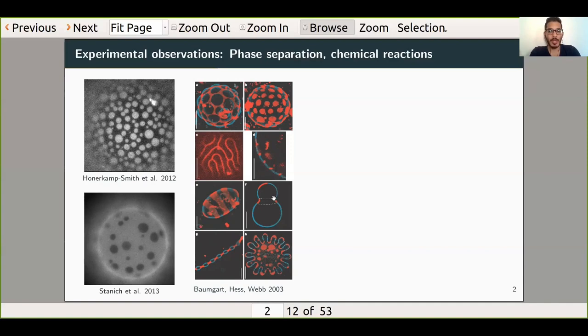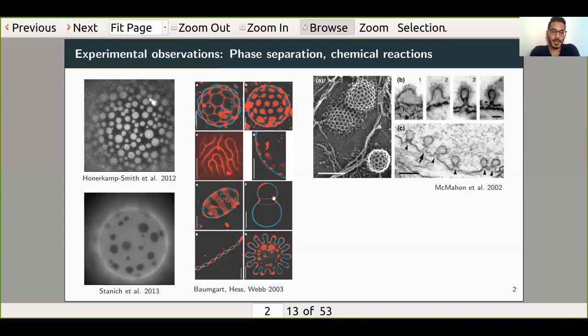Finally, another very relevant physical process for lipid membranes is that of chemical reactions with species in the surrounding fluid. In this sequence of experimental images, these proteins have bound to the membrane surface—this is the top view right here—to form these cage-like structures. These structures actually induce the membrane to bend. In this side view, you can see that these buds are starting to form and eventually they'll pinch off. It's one of the ways that the membrane can transport things inside and outside the cell.